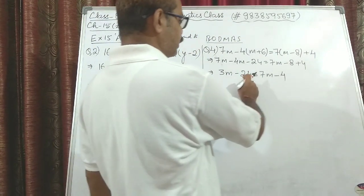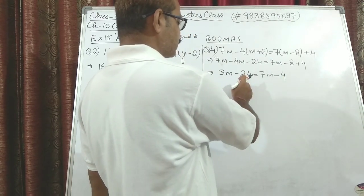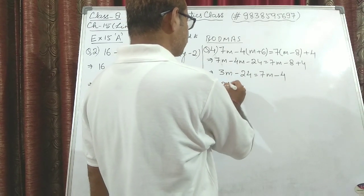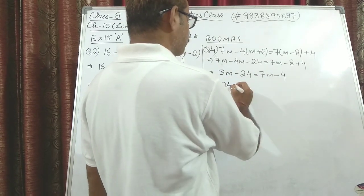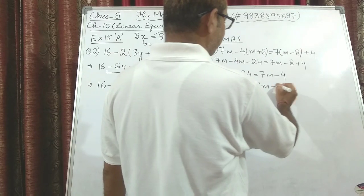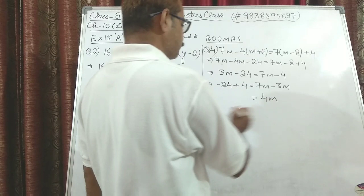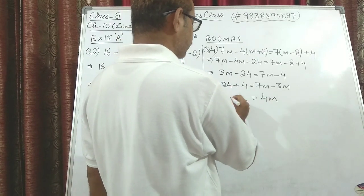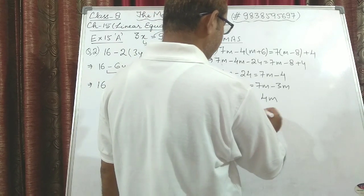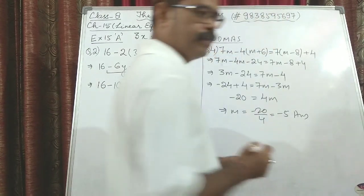7m − 8 + 4 gives 7m − 4. Now minus 4 comes to the left side and becomes plus 4, and 3m goes to the other side and becomes minus 3m. So: −24 + 4 = 7m − 3m, which gives −20 = 4m. So m = −20/4 = −5. That is the final value.